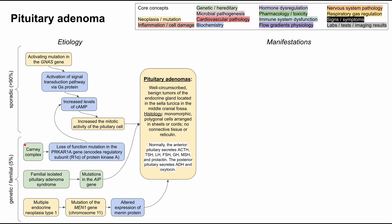There's also CARNEY complex, where there's a loss-of-function mutation in the PRKAR1A gene, which encodes the regulatory subunit of protein kinase A. This feeds back into the protein cascade, increasing levels of cyclic AMP, which then increases the mitotic activity of the pituitary cell to create a pituitary adenoma. The most important genetic cause remains MEN type 1.